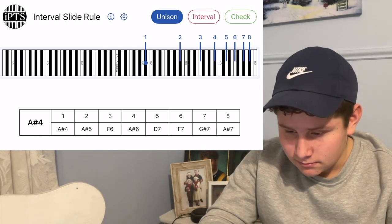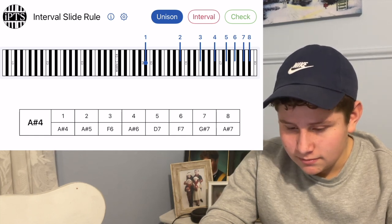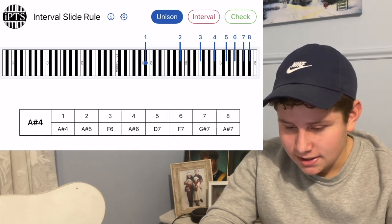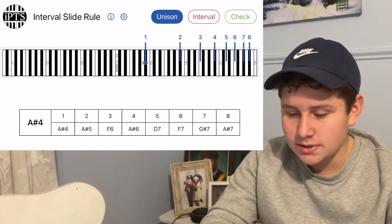Now, can you read off all the notes of the partial series? A-sharp 5, F6, A-sharp 6, D7, F7, G-sharp 7, A-sharp 7. Very good.